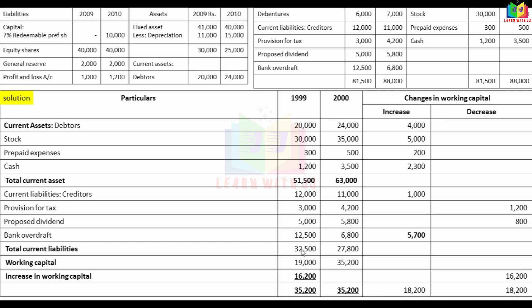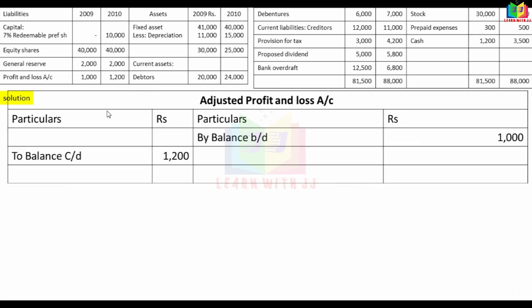Now we prepare the fund flow statement. Using the adjusted profit and loss account: opening balance is 1,000 and closing balance is 1,200. General reserve remains the same. We set up the adjusted P&L account.